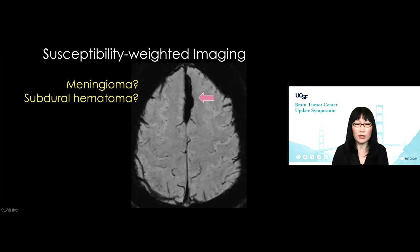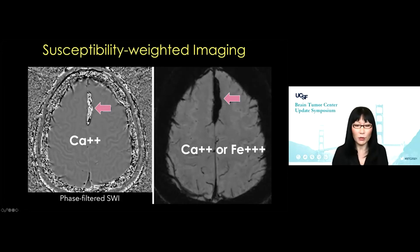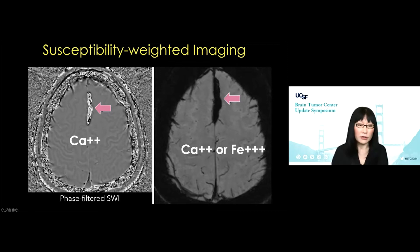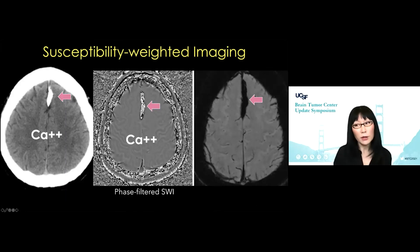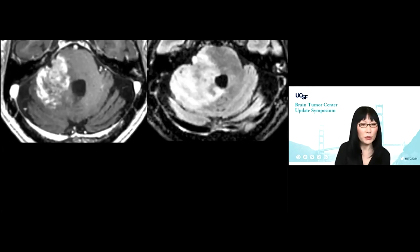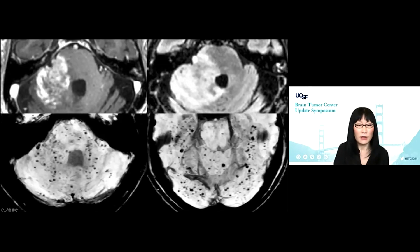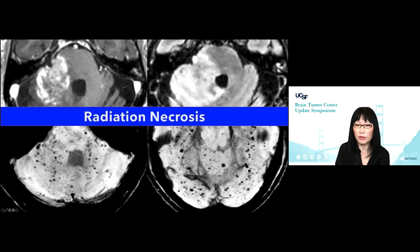Here's an example where susceptibility weighted imaging suggests either meningioma or subdural hematoma. But we can do a phase filter susceptibility weighted imaging that tells us calcium appears bright. So we know this is a benign dural calcification and not a meningioma, and not a blood-containing structure — we have CT to prove it. We really don't need CT to prove something is calcium anymore because now we have SWI. Here's a patient radiated multiple times for ependymoma with what looks like a very angry mass in the brainstem. Once you add susceptibility weighted imaging, these are numerous micro hemorrhages associated with radiation therapy — this is radiation necrosis.